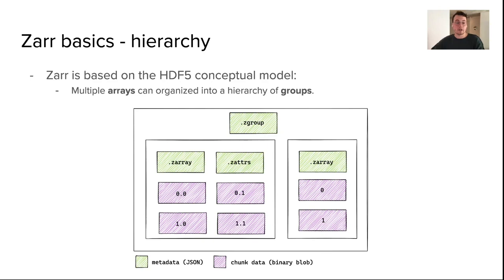Zarr is based off the HDF5 data model, where multiple arrays are organized within a hierarchy. Metadata is encoded in JSON, and chunk data are simply compressed blobs. The array metadata, denoted Z array, describe exactly how each of those blobs are encoded.